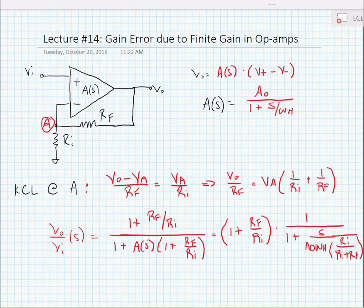After simplification, we have that the gain of the op-amp is equal to (1 + RF/RI) times the quantity 1 over [1 + s/(A₀ωh) × RI/(RI + RF)].